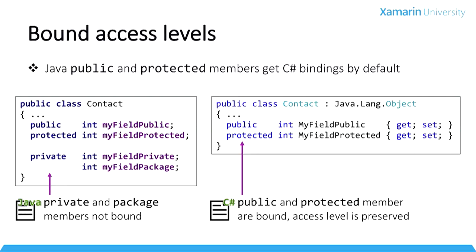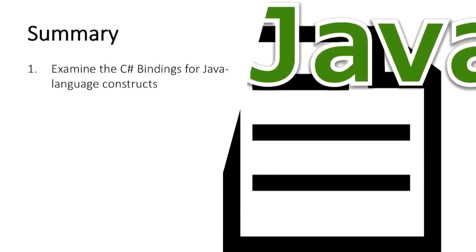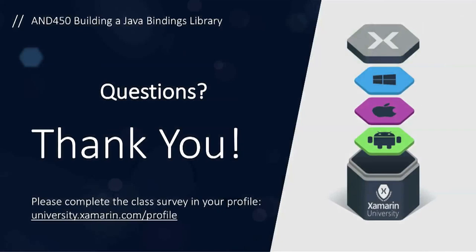For access levels in the Java code, anything that's public or protected gets bound; things that are private and package-level do not. The theme here is that the bindings engine tries to generate C# code that will be convenient and feel normal for a C# developer — get/set methods in Java mapping to C# properties, listener patterns mapping to C# events. That brings us to the end of Android 450, Building a Java Bindings Library. My name is Mark Taparowskis with Xamarin University — thank you very much for watching.